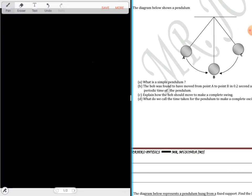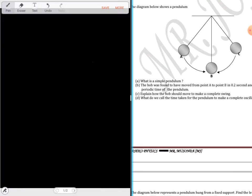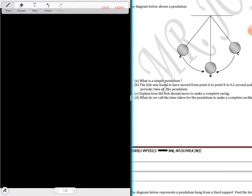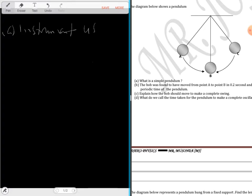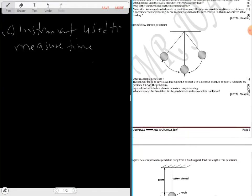What is a simple pendulum? The diagram below shows the pendulum. A simple pendulum is an instrument which is used to measure time. It's a simple machine.